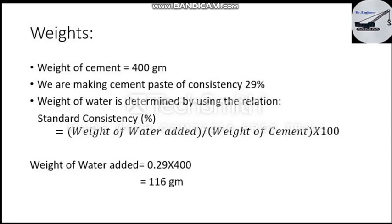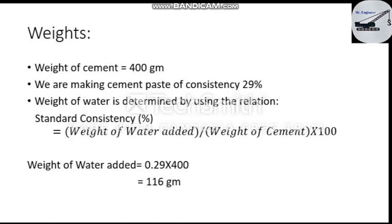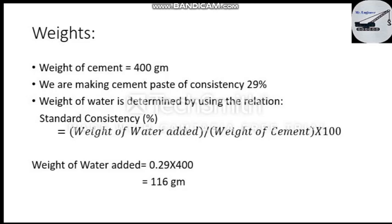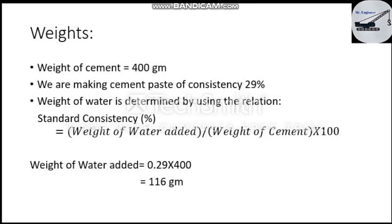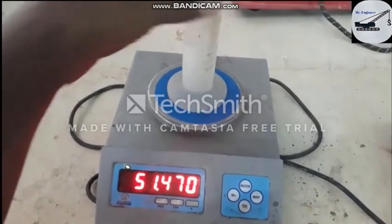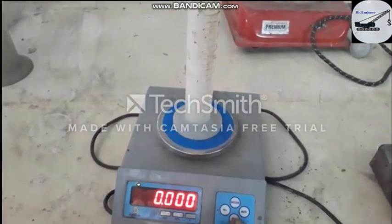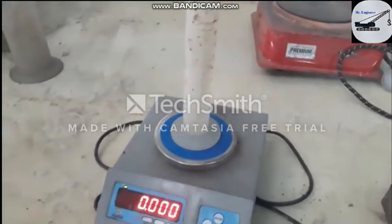We take 29 percent water, which becomes 116 grams. If that 116 grams of water when added to cement gives a penetration reading of 5 mm to 7 mm, then 29 percent will be the standard consistency of our cement. No information is given about the amount of water in any standard or code, so we will use the trial method, selecting first 29 percent water and checking the penetration reading. If it is not in range, we will increase the amount of water.